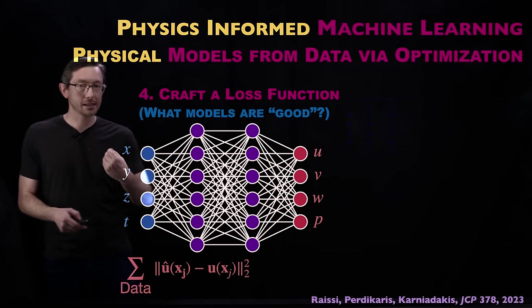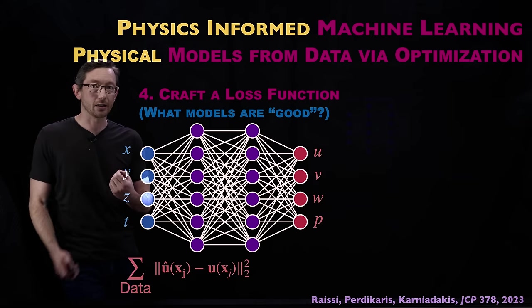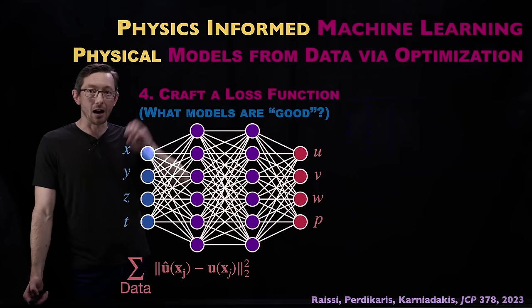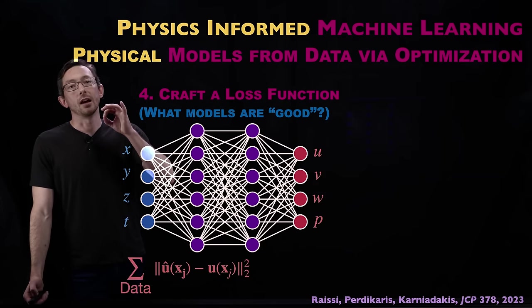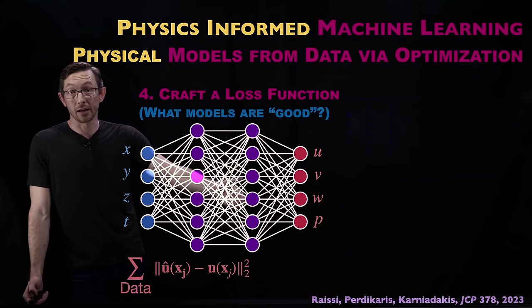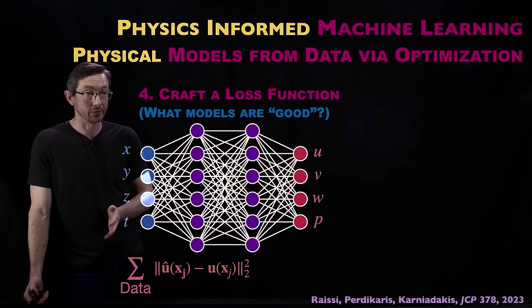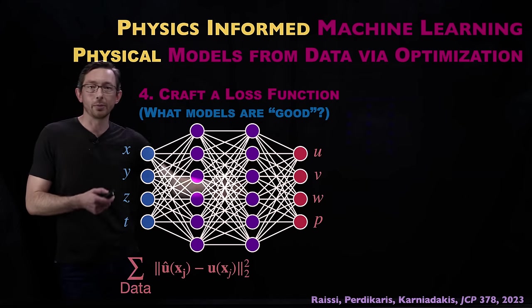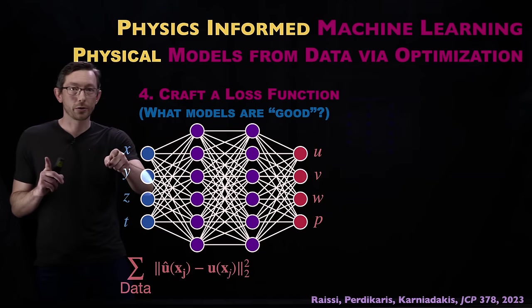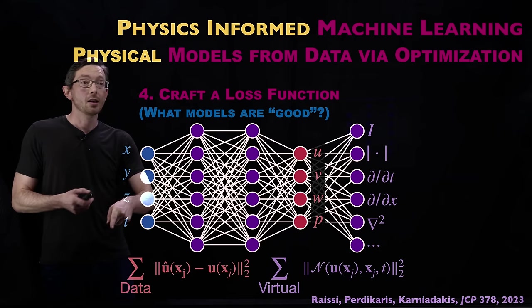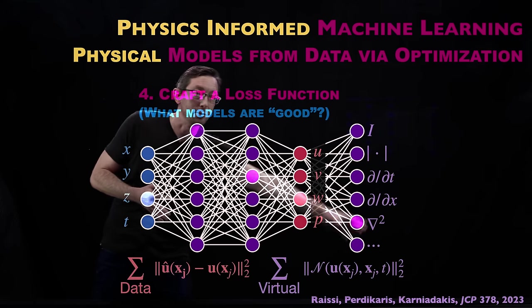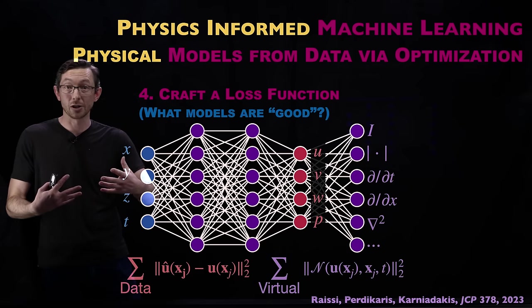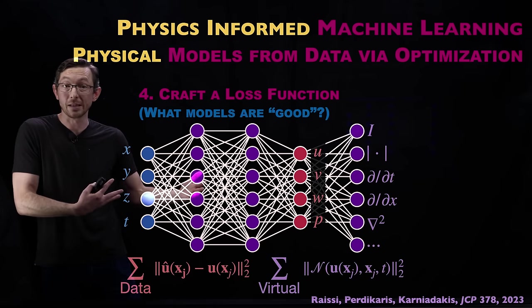What PINNs does — what physics-informed neural networks does that's very clever — is they add a second loss function. Because of the automatic differentiability of modern machine learning environments like PyTorch, Jax, and TensorFlow, you can take these quantities U, V, W, P and compute their partial derivatives with respect to space and time. You can essentially build for free all of these partial derivatives that went into the partial differential equation that you think your system should be satisfying.